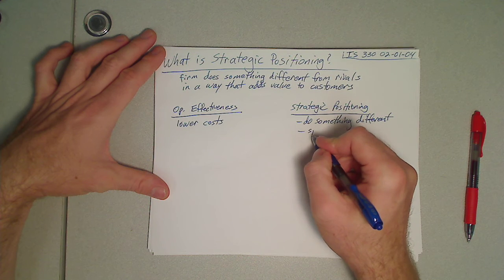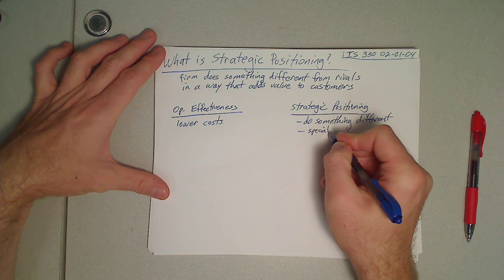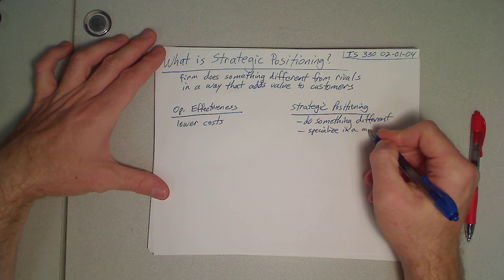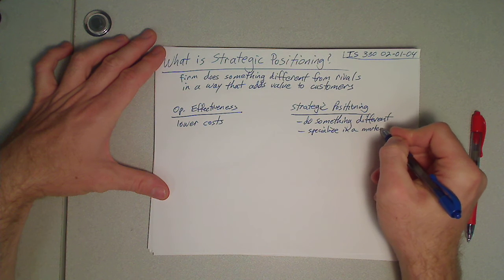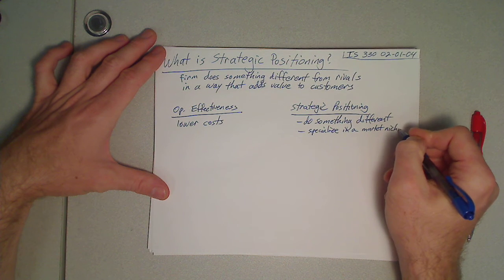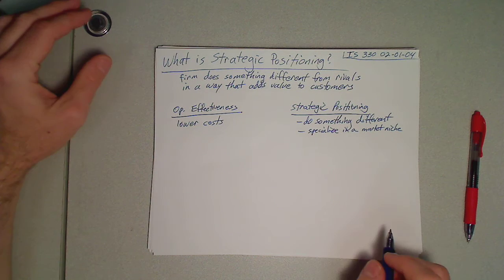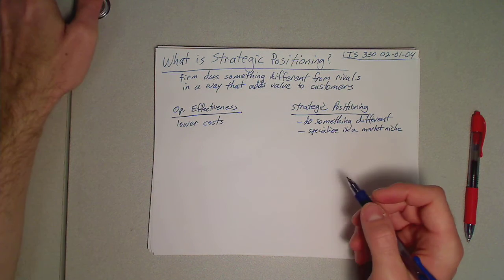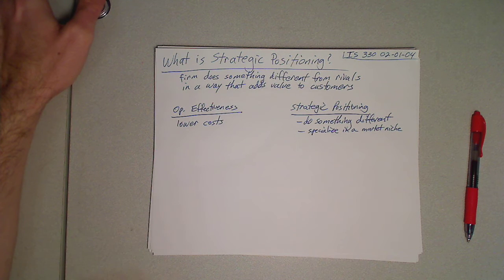One is you can specialize in what's called a market niche. You can say we're only going to serve students. We specialize in this whereas our competitors are generalized.